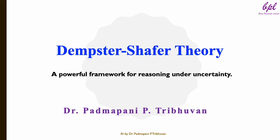Have you ever wondered how intelligent systems make decisions when faced with incomplete or conflicting information? Whether it's a self-driving car processing sensor data or a spam filter deciding if an email is spam, uncertainty is everywhere. That's where Dempster-Shafer theory comes into play. In this video we will explore how this theory handles uncertainty by combining evidence and helping us make better decisions.